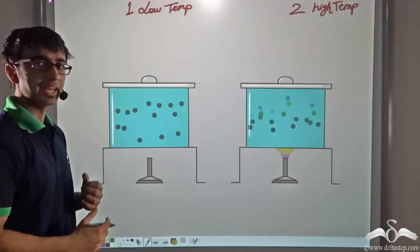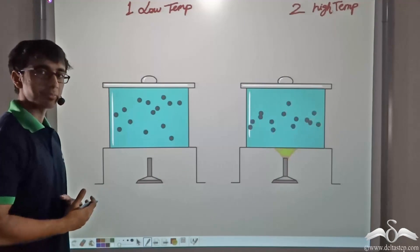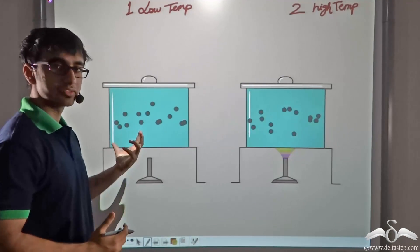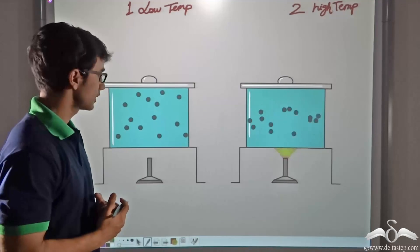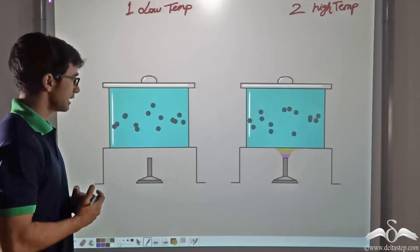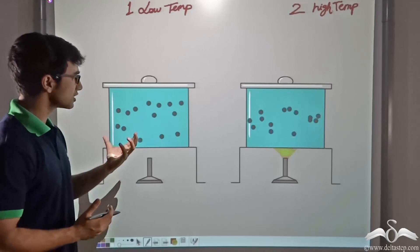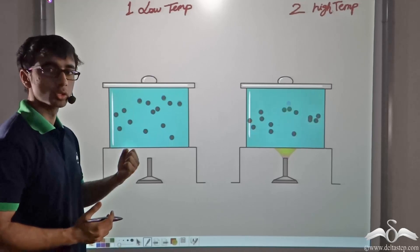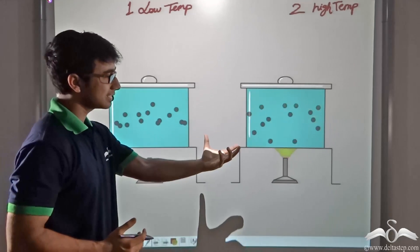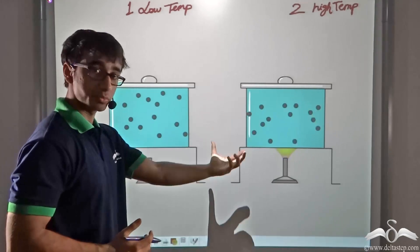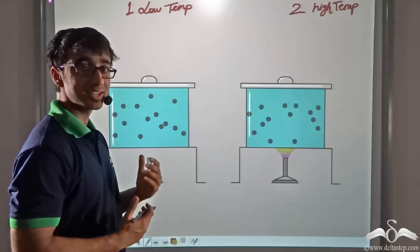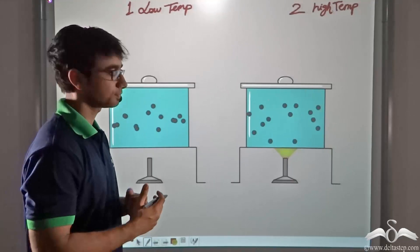Now can you tell me what is happening? In the case of the first vessel, when the molecules are not being heated, they are moving about slowly. And in the second case, where it is being heated, the molecules are in rapid motion.